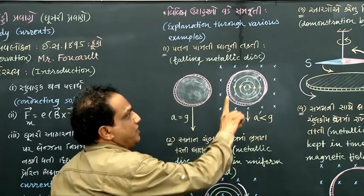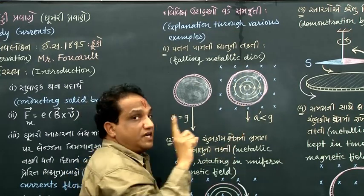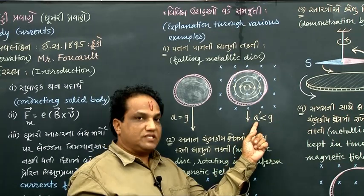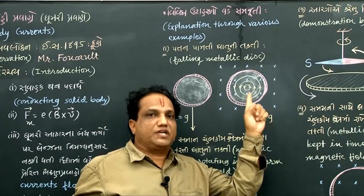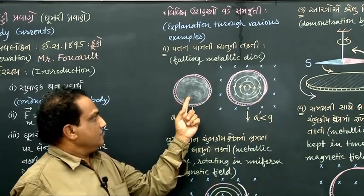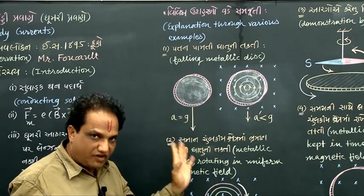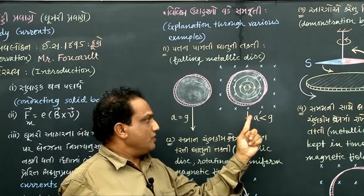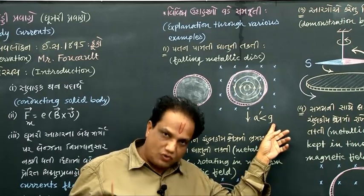Because of the presence of this resistive force, the motion of this disc is retarded. That is why its acceleration is less than gravitational acceleration, so it cannot be considered as a free fall. Here, without the field, motion is free fall, but in the magnetic field, motion is not a free fall because acceleration is less than gravitational acceleration.